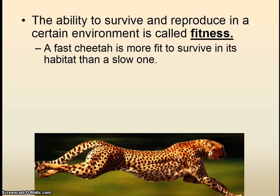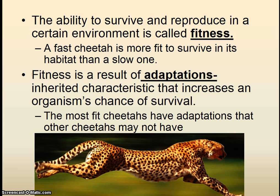Darwin understood what motivates humans to do artificial selection — we choose creatures based on what appeals to us. In nature, he decided that the most fit creatures would be the ones to survive and reproduce. The word 'fit' is short for fitness — the ability to survive and reproduce in a certain environment. A fast cheetah is obviously more fit to survive in its habitat than a slow one. Here's another key vocabulary word: Darwin said fitness is a result of things called adaptations.